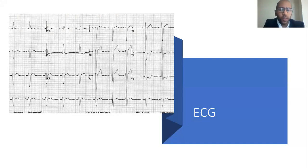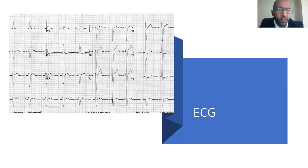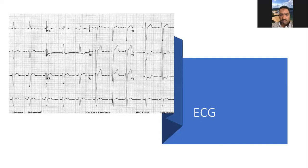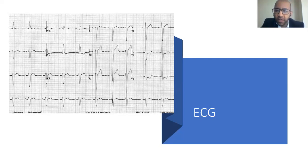Thank you very much, Dr. Abubakr. Indeed this patient has left axis deviation and what could look like an incomplete left bundle branch block. There is ST sloping or reverse tick sign in the lateral leads, with ST elevation in the anterior leads, and positive voltage criteria for left ventricular hypertrophy. I'll convince you that this ECG is quite typical of left ventricular hypertrophy.